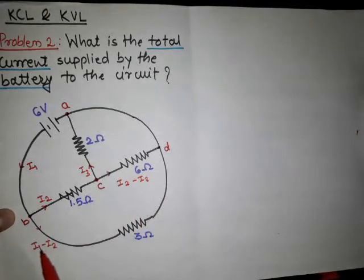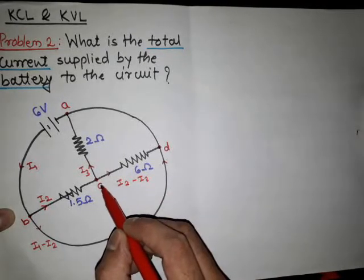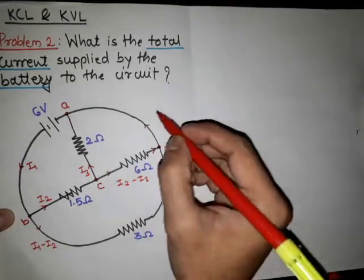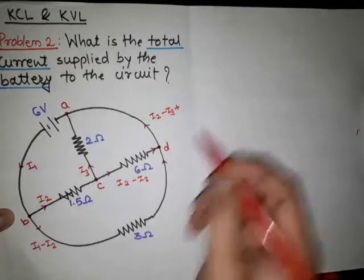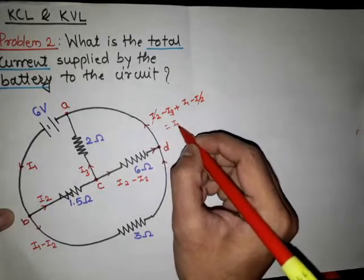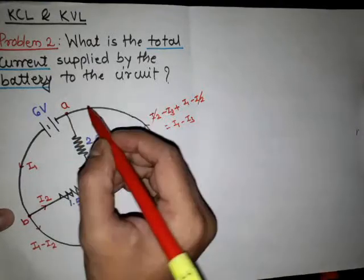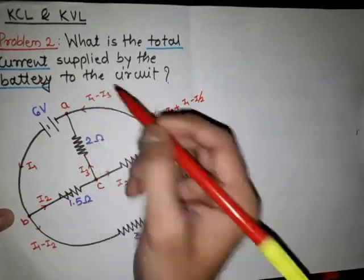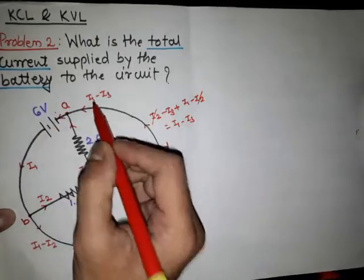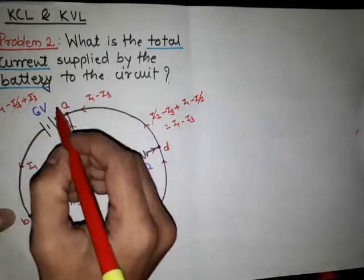The current I1 minus I2 coming in branch BD meets at node D, and the current I2 minus I3 coming from C also meets at D. So the total current coming into the DA branch is their addition: I2 minus I3 plus I1 minus I2. The I2 terms cancel, leaving I1 minus I3. At node A, the currents I1 minus I3 and I3 combine, giving I1 minus I3 plus I3, which equals I1. This confirms our assumption is correct.